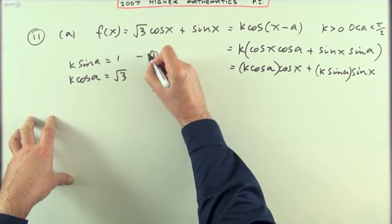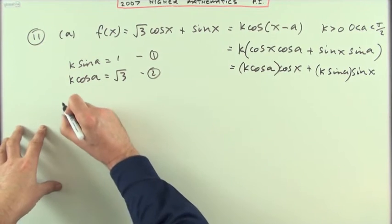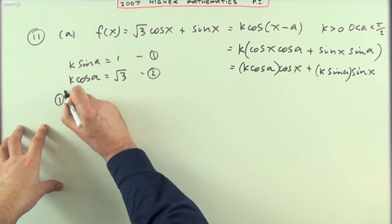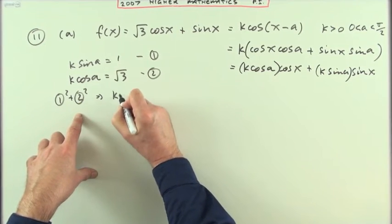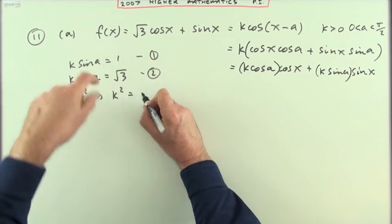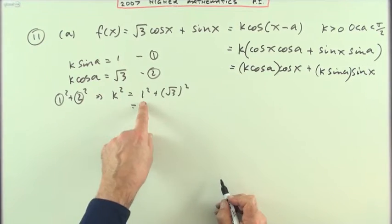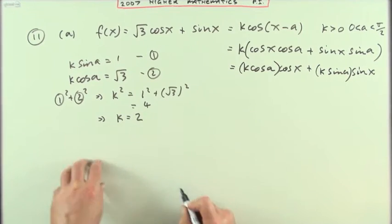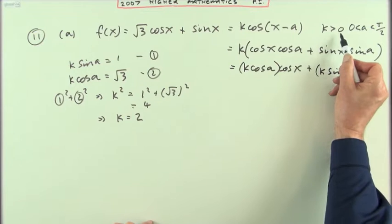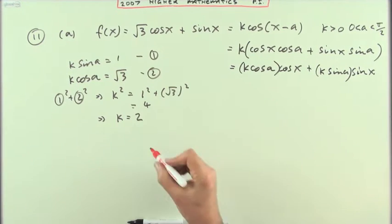What you really have are a pair of simultaneous equations to solve for k and A. To find k, you square and add them. You'll end up with k squared equals one squared plus root three squared, that'll be one plus three, four. So k will be the square root, which is two. It could be plus or minus two, but it said here k was greater than zero, so I'm just using the two.